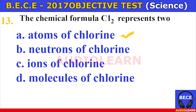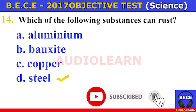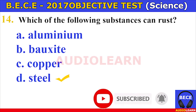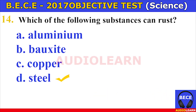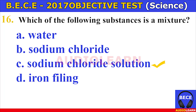Number fourteen. Which of the following substances can rust? A. Aluminum, B. Bauxite, C. Copper, D. Steel. The answer is D. Steel. Number fifteen. Energy stored in food is referred to as A. Chemical energy, B. Heat energy, C. Solar energy, D. Kinetic energy. The answer is A. Chemical energy. Energy stored in food is referred to as chemical energy.